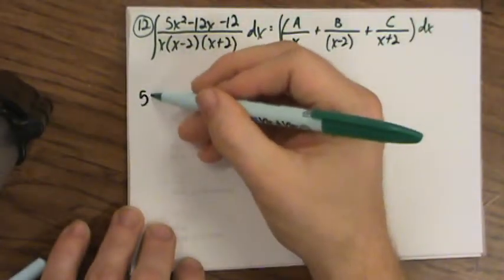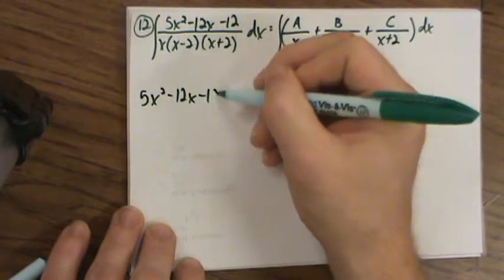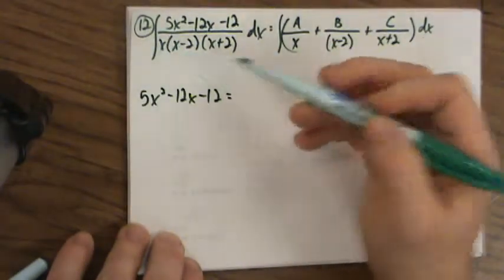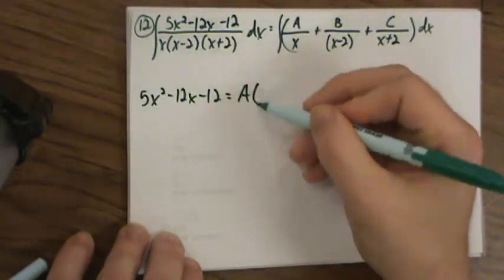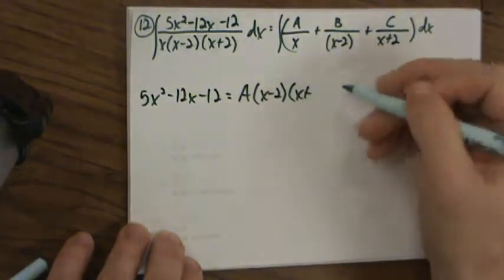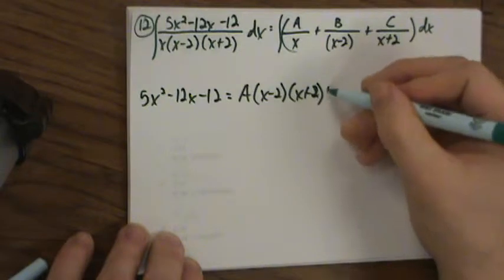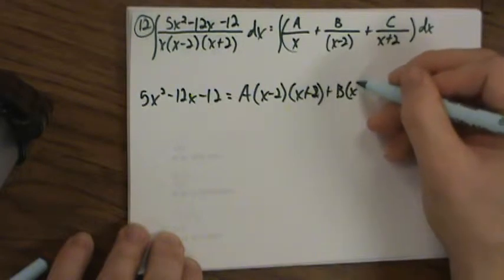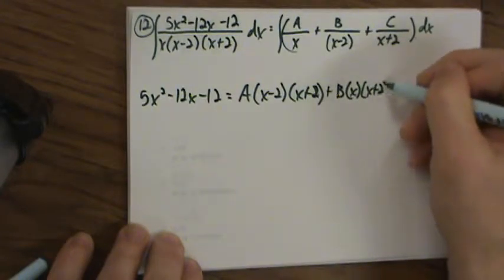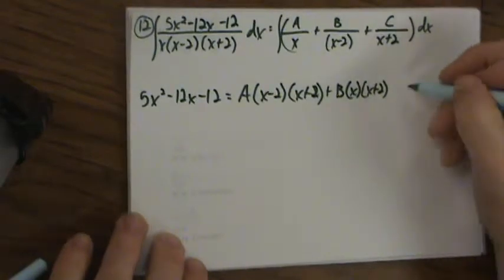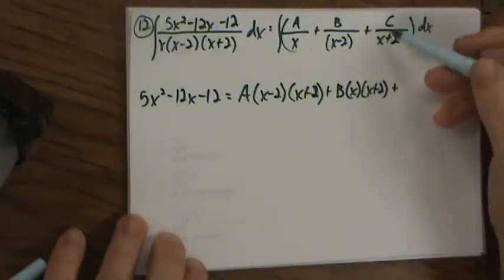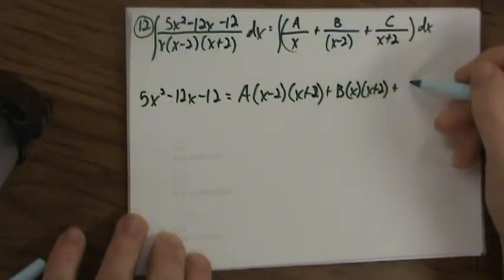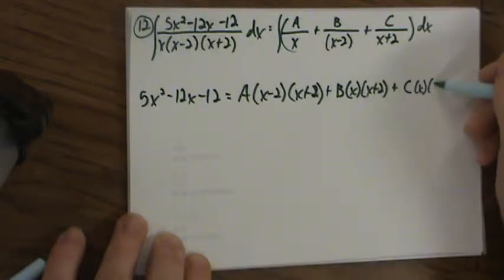So the left side would be 5x squared minus 12x minus 12 equals, on the right side: multiplying A over x by the common denominator cancels the x, leaving A times x minus 2 times x plus 2. Then B times x times x plus 2, because the x minus 2 would have gotten cancelled. And C times x times x minus 2, because the x plus 2 is cancelled.